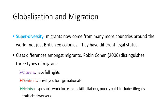Cohen also identifies a third group referred to as helots — an ancient Greek word. These are a disposable workforce of unskilled labourers who are generally very poorly paid, and this is where we often find large numbers of illegally trafficked workers. Even in the United Kingdom, sadly, modern-day slavery occurs. Hired farmhands, for example, may be smuggled into the UK without official papers, and once their work is done they are left to find their way home or somehow legalise their status.